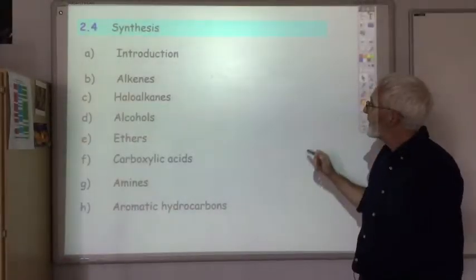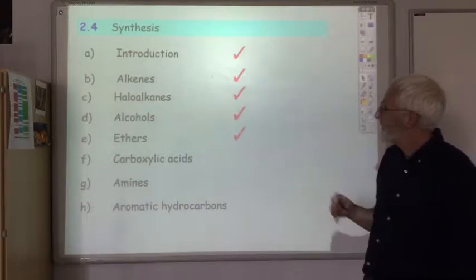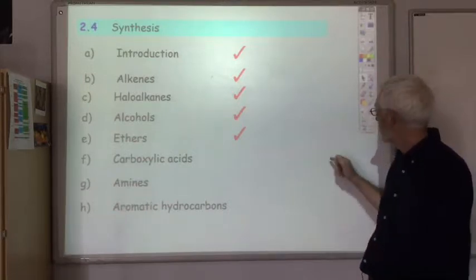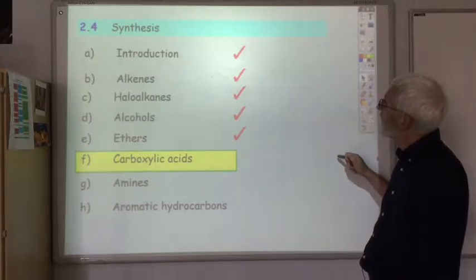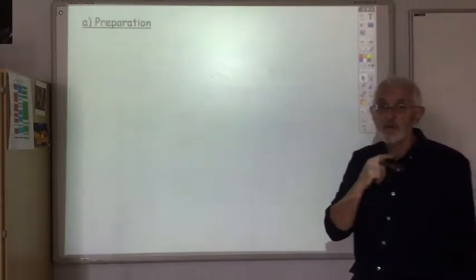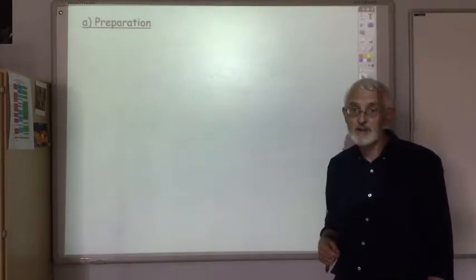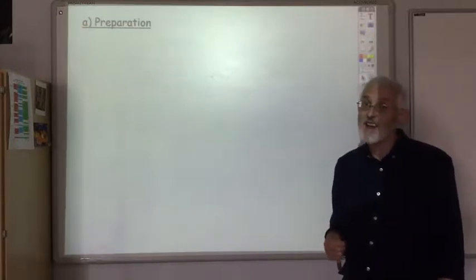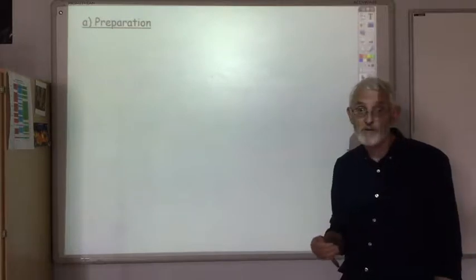So far in section 2.4 we've covered, after the introduction, we've done alkenes, halo alkenes, alcohols and ethers. So now we're going to tackle carboxylic acids and as always we're going to start with how those carboxylic acids are prepared. There's four or five different ways in which we can make carboxylic acids, an awful lot of which, in fact probably all, we've come across already.